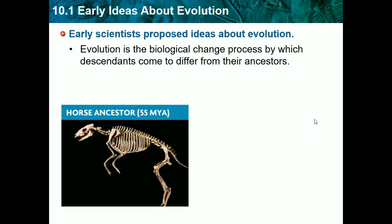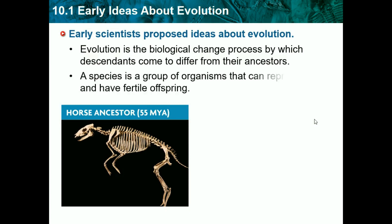Here's a horse ancestor. As we can see, it looks small and it has small legs, but today horses have big legs and they're much bigger than this, so they adapted to their situation. A species is a group of organisms that can reproduce and have fertile offspring, so a species is any group that can reproduce together.